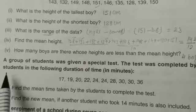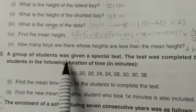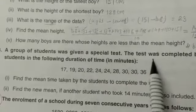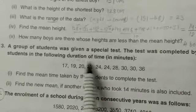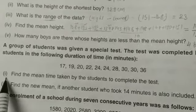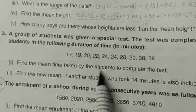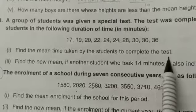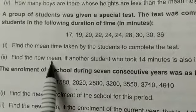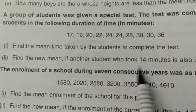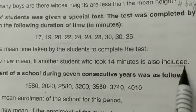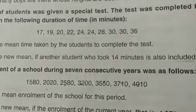A group of students was given a special test. The test was completed by various students in the following duration of time in minutes. These are the time durations. First part: find the mean time taken by the students to complete the test. It is already arranged in ascending order.